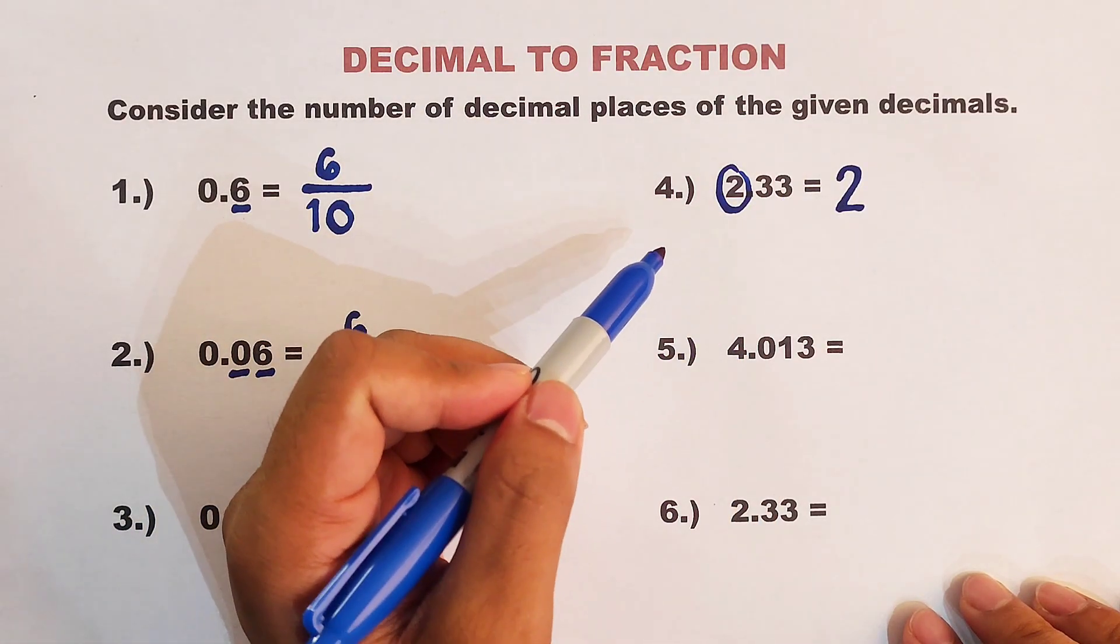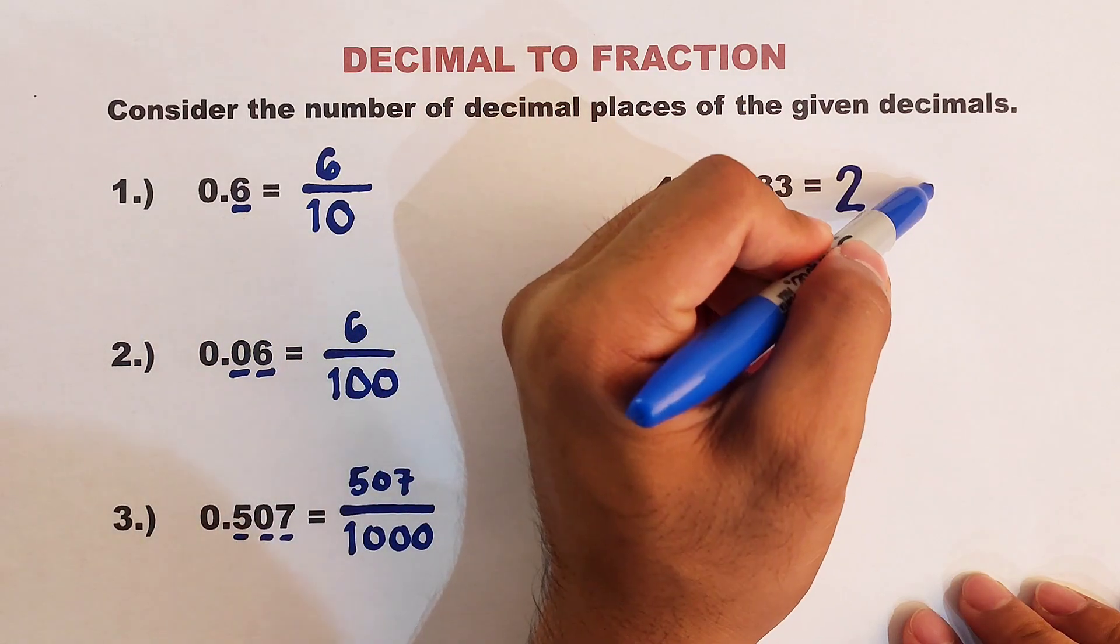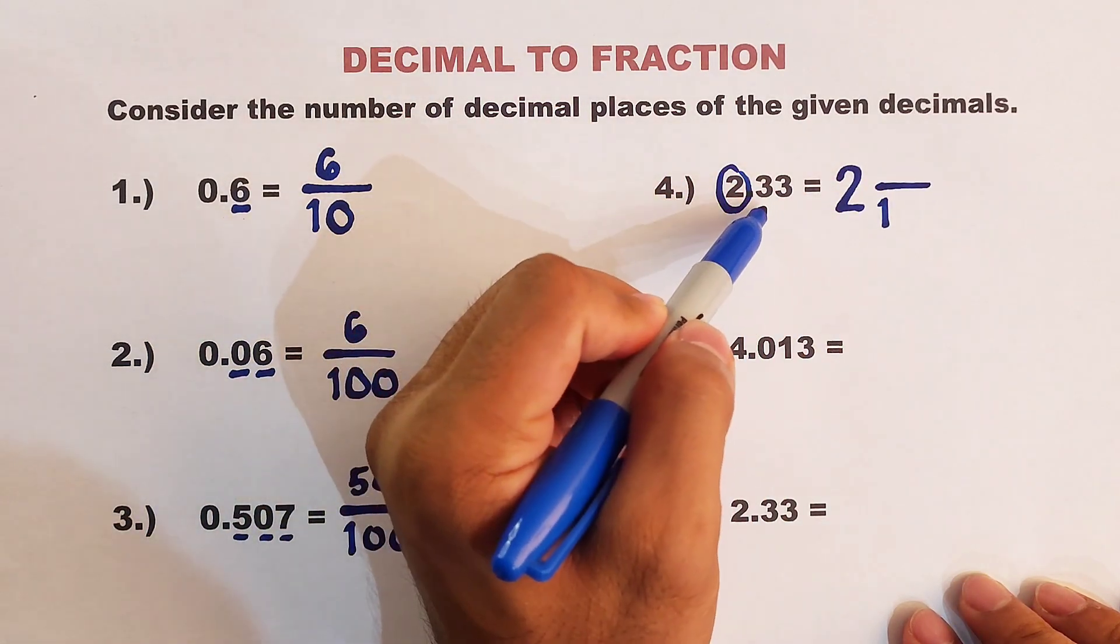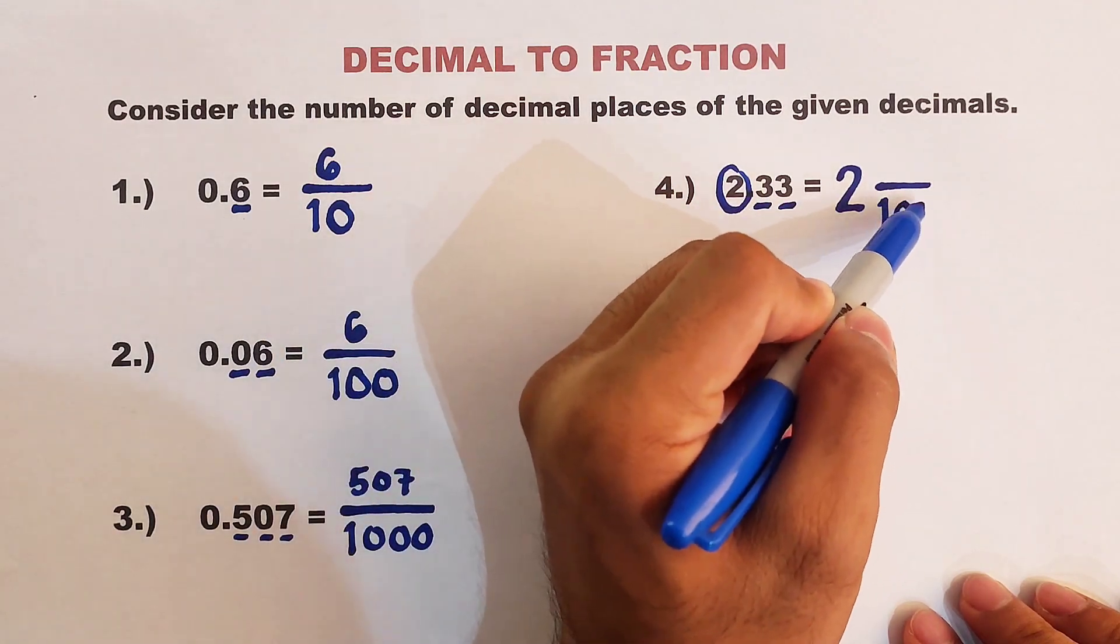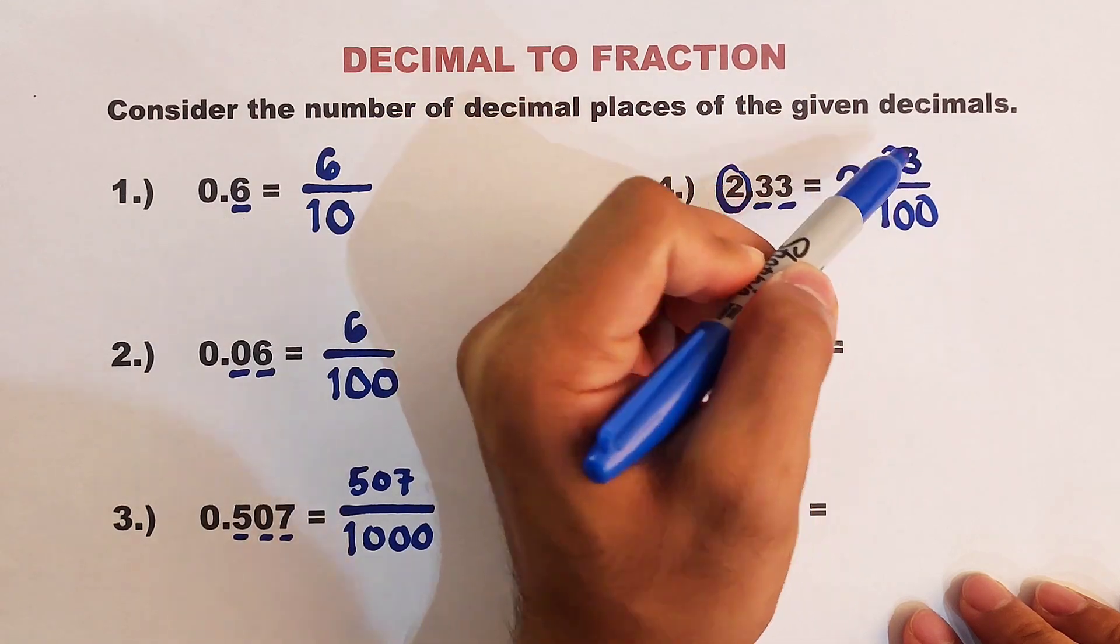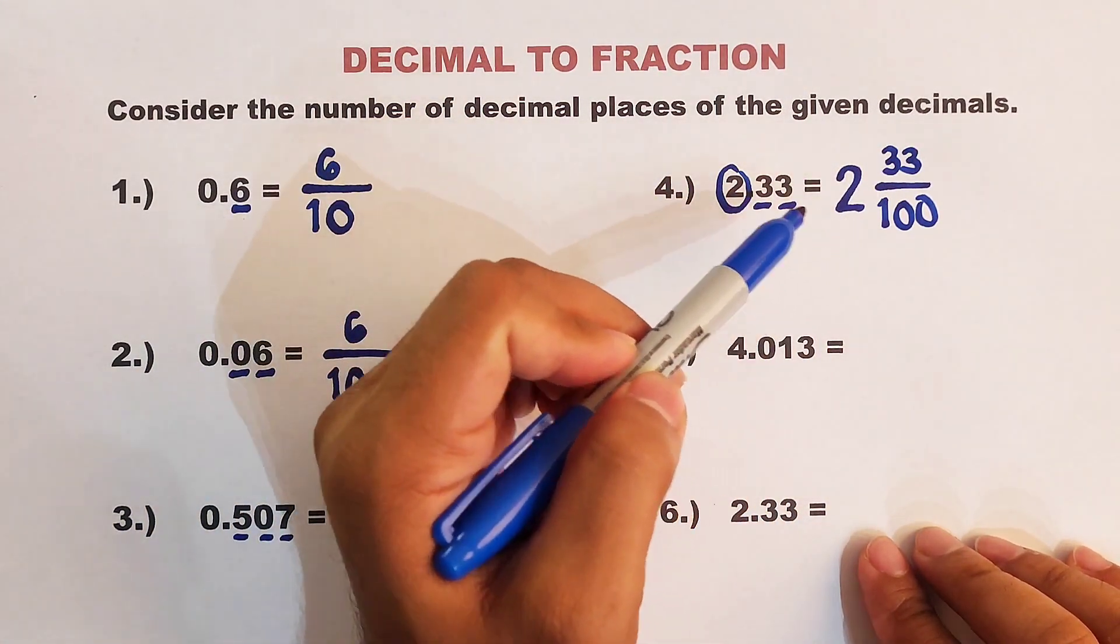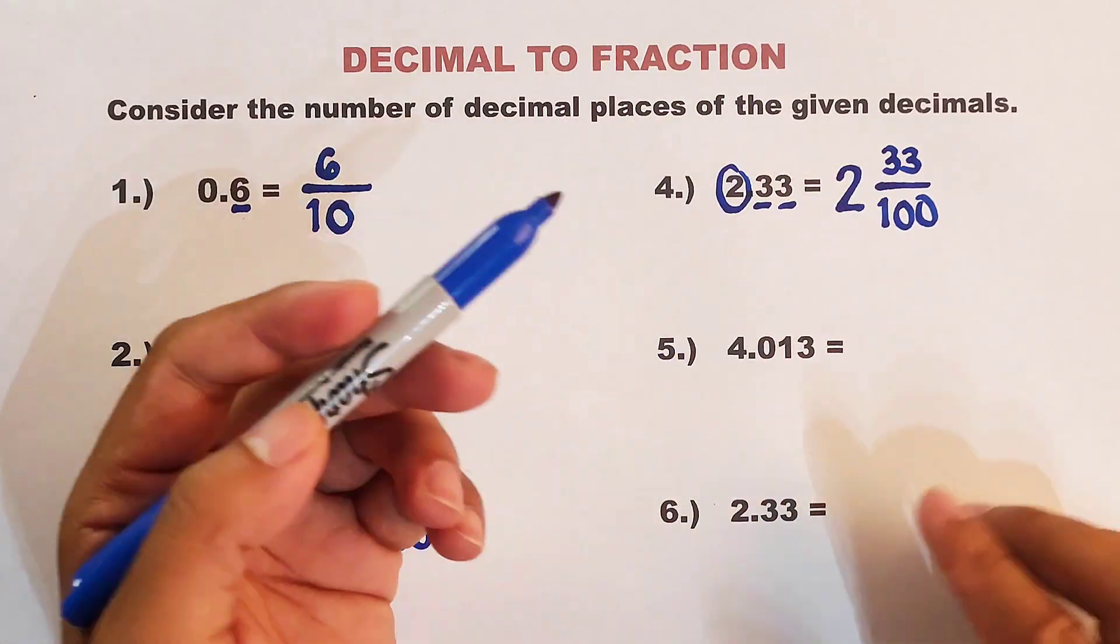Next, our bar sign here and we will put a 1 here. Then we will count the number of decimal places. We have 1 and 2, so we have 2 zeros here. And then copy this number. We have 33, meaning the equivalent fraction of 2.33 is 2 and 33 over 100. As simple as that.